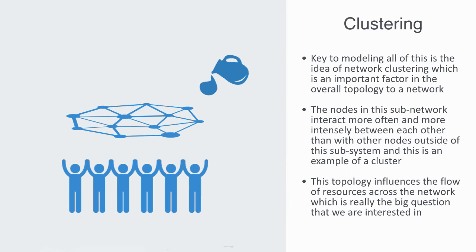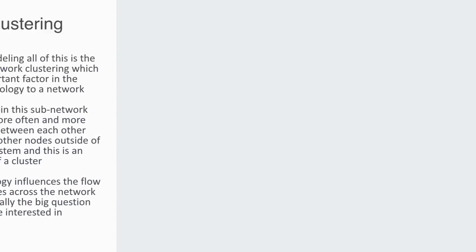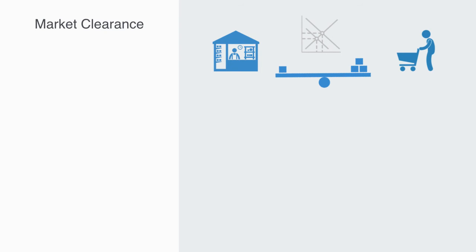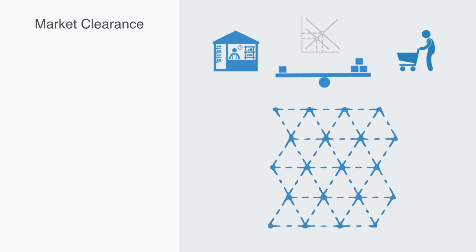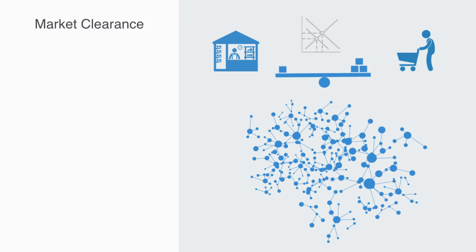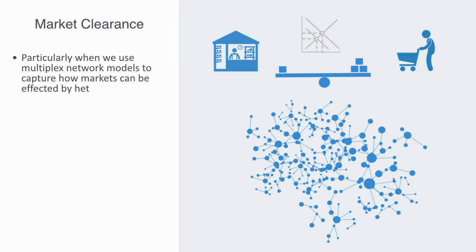Due to this, the European economy forms a cluster within the global economic network where the nodes in this sub-network interact more often and more intensely between each other than with other nodes outside of this subsystem. And this is an example of a cluster. This clustering will again give the network a heterogeneous topology, and it is this topology that influences the flow of resources across the network — which defines who gets what, that is to say, the macro level resource distribution pattern. If we remember, the wealth is in the network, and every component's slice of the pie is in their access to the network.